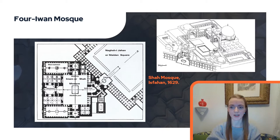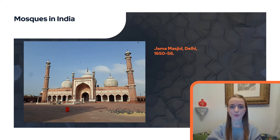The domed mosque with iwan architecture was also adopted in India. In the Mughal period it developed into a typical form of Indian mosques, with three large domes arranged side by side above the prayer hall.